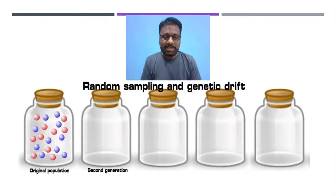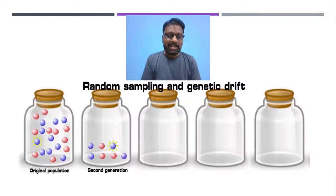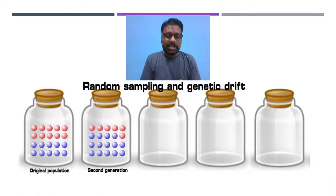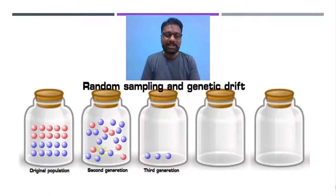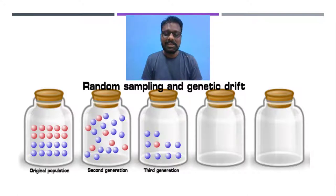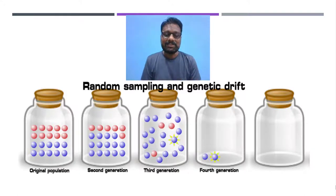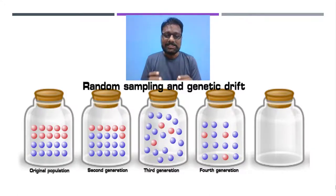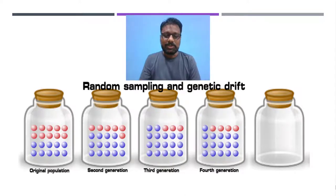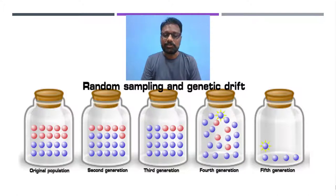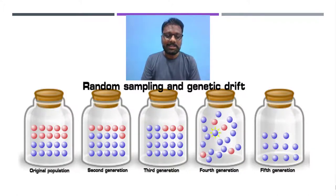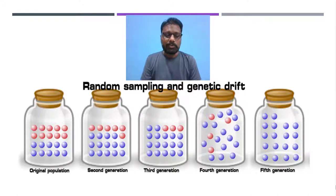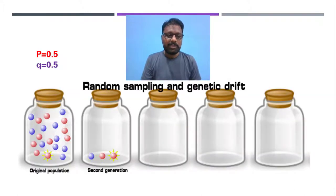In this animation, the first jar contains the allelic frequency of the original population, where gradually by random chance the alleles move from one generation to another generation. There is a change in the allelic frequency of the gene pool. We can observe that slowly the red alleles, which are dominant, have been eliminated and completely replaced by blue ones — purely by chance. Initially the original gene pool consists of 10 red alleles and 10 blue alleles, so the p-value and q-value are both equal to 0.5.